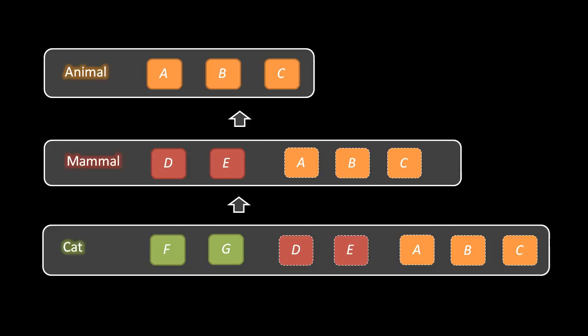A parent is a direct, immediate ancestor and a child is a direct, immediate descendant. Animal is a parent of mammal and mammal is a child of animal, but animal is not a parent of cat, nor is cat a child of animal, because that inheritance is not direct — only indirect through mammal.